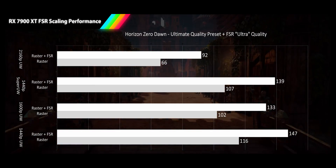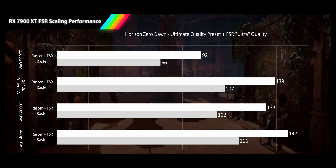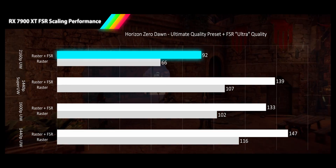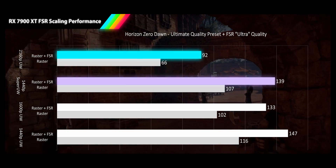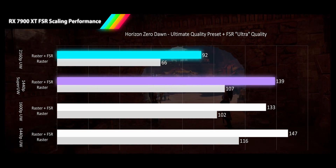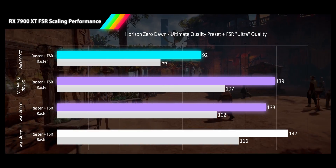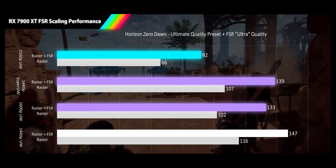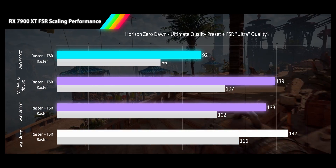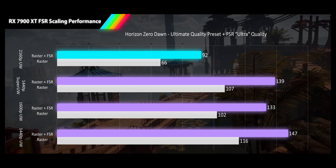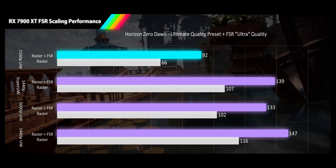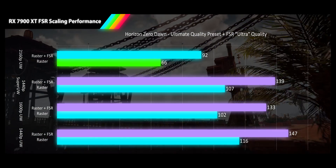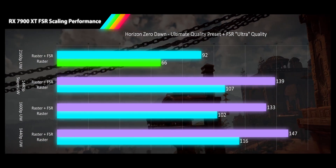Next up we have Horizon Zero Dawn, which also sees strong scaling with FSR. 4K ultrawide sees a 39% performance improvement, 1440p super ultrawide gets 30%, at 1600p we still see negative performance scaling versus the super ultrawide resolution despite a 31% improvement, and 1440p ultrawide is a solid 27% improvement, pushing every single resolution into the next performance tier — all in high refresh rate range or better.